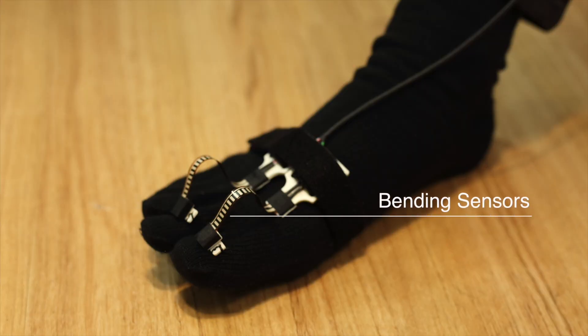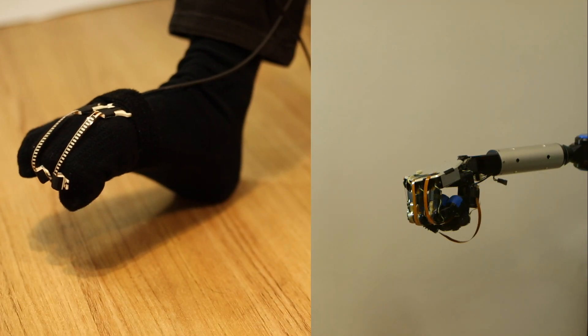A sock device is worn to detect the position of the toes. The sock device includes two bending sensors which measure the movement of the toes and control the condition of the robotic hands.